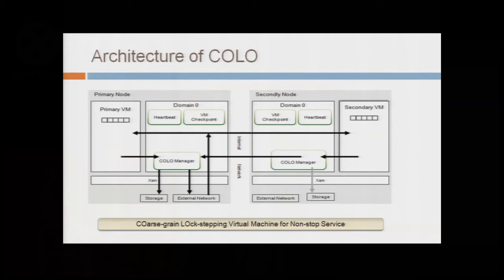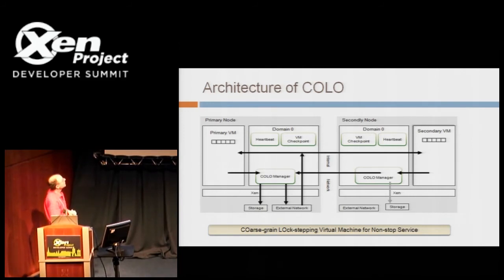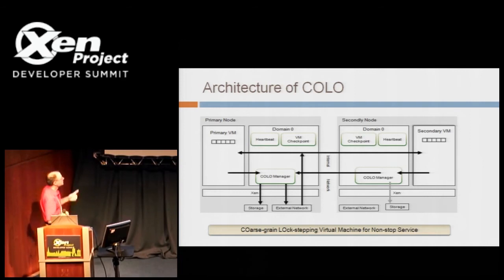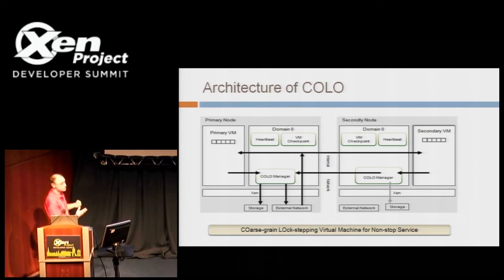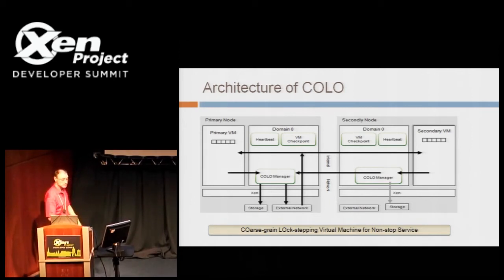If we look at a picture with a little more detail, we see there's a heartbeat node within DOM zero. That's used to determine if there's a failover needed — when you don't get the heartbeat you're expecting, you do the failover. There's a checkpoint facility that manages the synchronizations, and the Colo manager where the response packets are compared and decisions are made. Other than that, it's just the primary and secondary VMs on the system, so it's fairly clean.